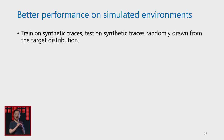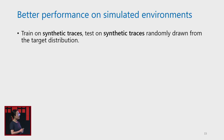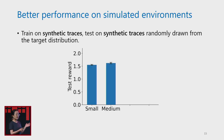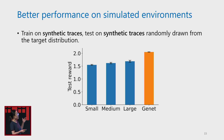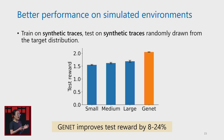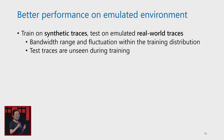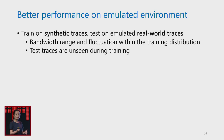In the evaluation, we increase the difficulty of the testing environment to show how generalizable Genet is. First, we show performance on simulated environments — training on synthetic traces and testing on synthetic traces randomly drawn from a target distribution. Compared with traditional RL baselines, Genet performs the best. We then increase testing difficulty using an emulated environment: training on synthetic traces but testing on emulated real-world recorded traces. The real-world traces' bandwidth range and fluctuation are within the training distribution of the synthetic range, and the testing traces are not seen during training.